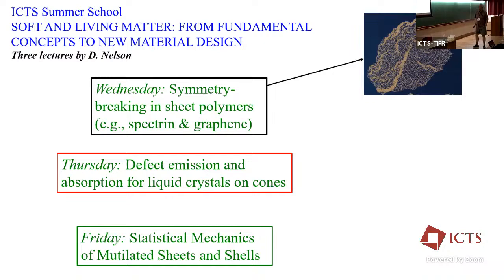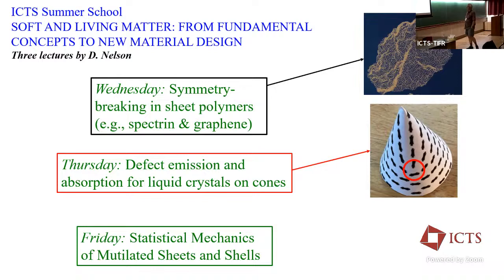I'm going to give my second lecture today, and we're going to switch gears a little bit. Yesterday, we talked about symmetry breaking of thermally fluctuating sheet polymers motivated by spectrin and graphene. Today, I'm going to tell you a little bit about statistical mechanics on cones. I always thought cones were pretty boring because they have zero Gaussian curvature most of the time, but I find them somewhat charming.